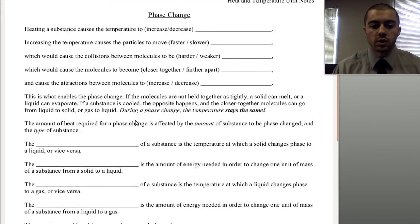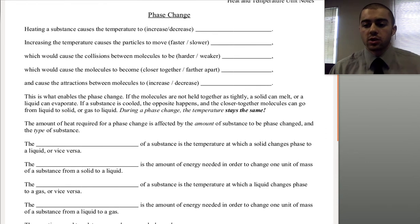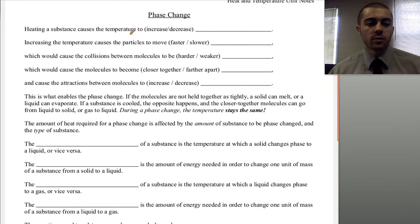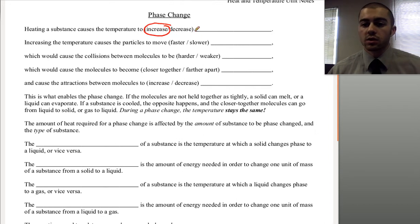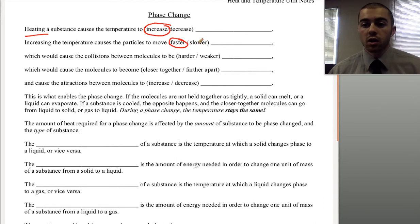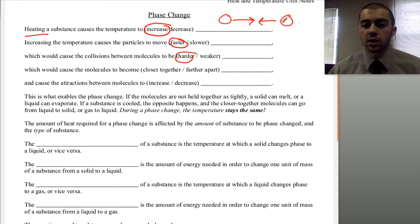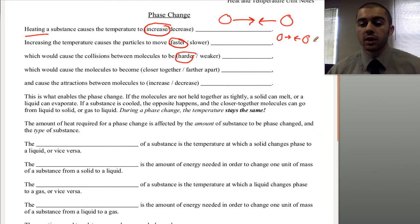The next topic is phase change. We can think through it logically using the energy concepts we already know. If we heat a substance, that causes the temperature to increase, which causes the particles to move faster — based on the definition of temperature, higher temperature means higher kinetic energy. If the particles are moving faster, the collisions between molecules are harder, just like two cars crashing at 50 miles per hour versus 5 miles per hour — the faster crash is much harder.